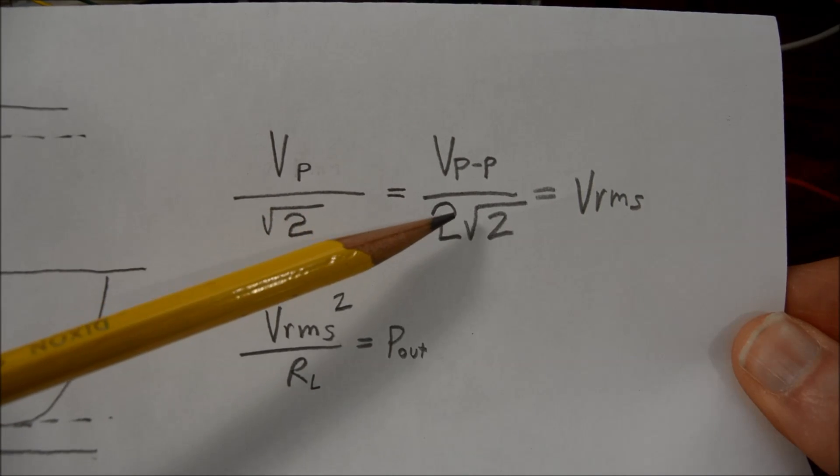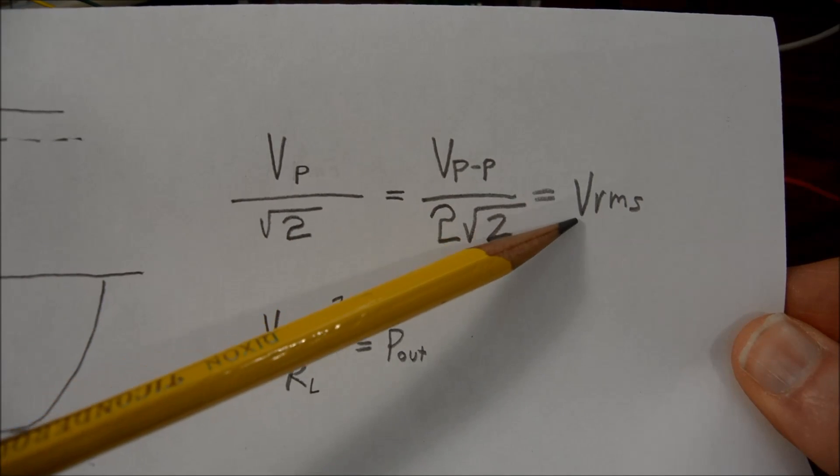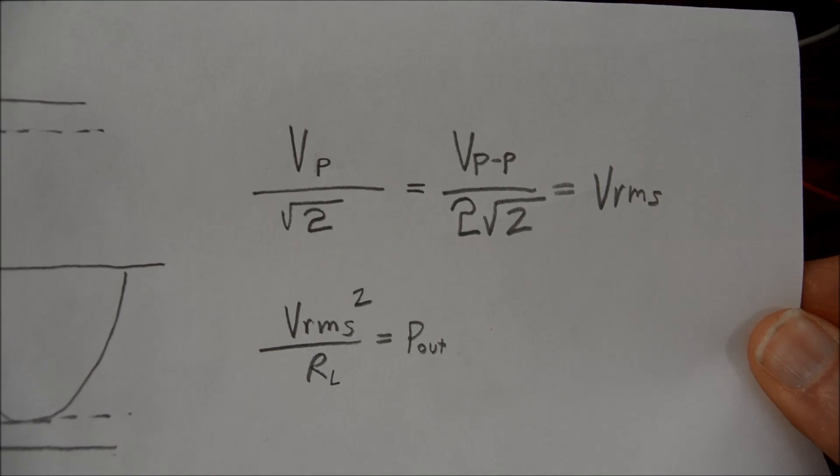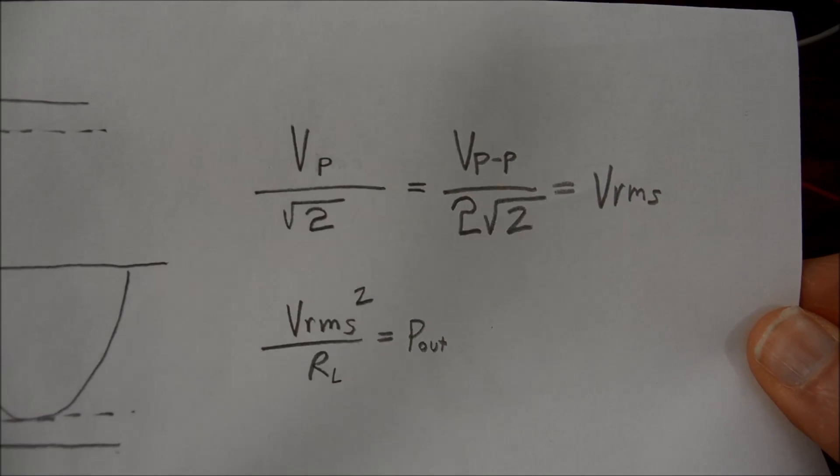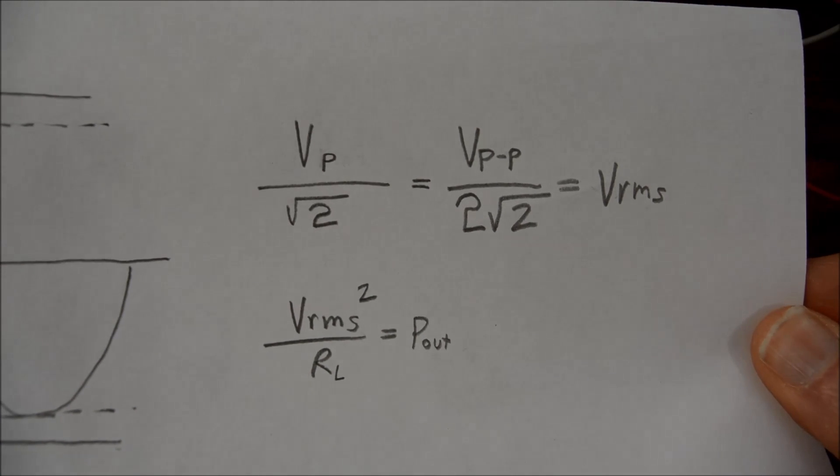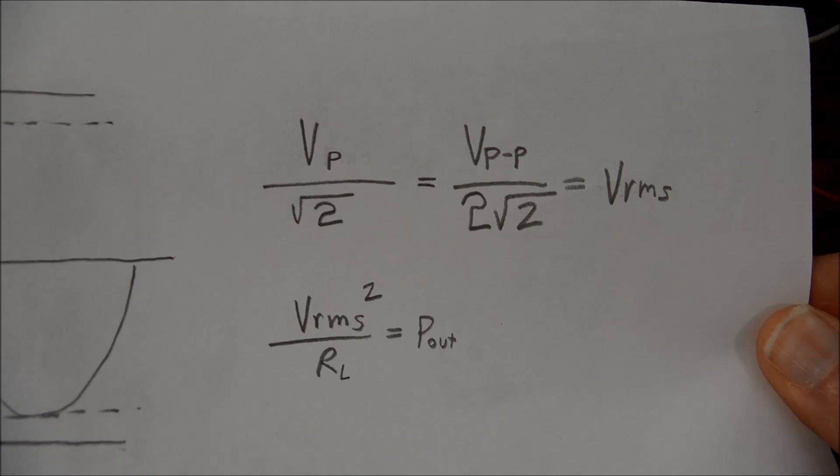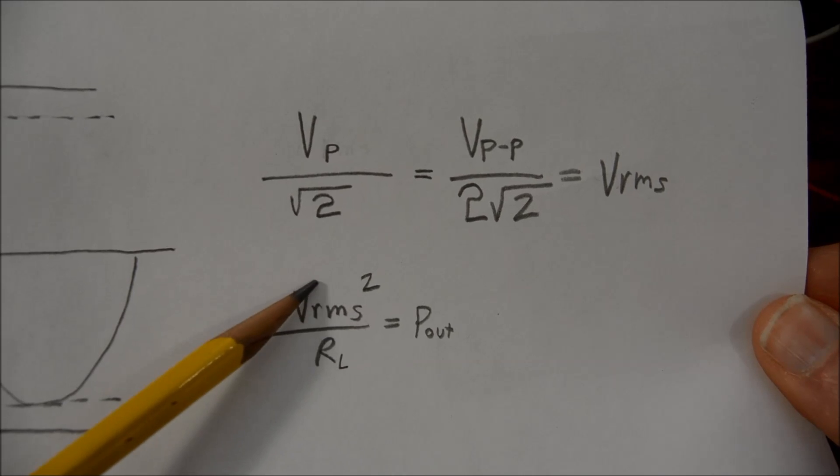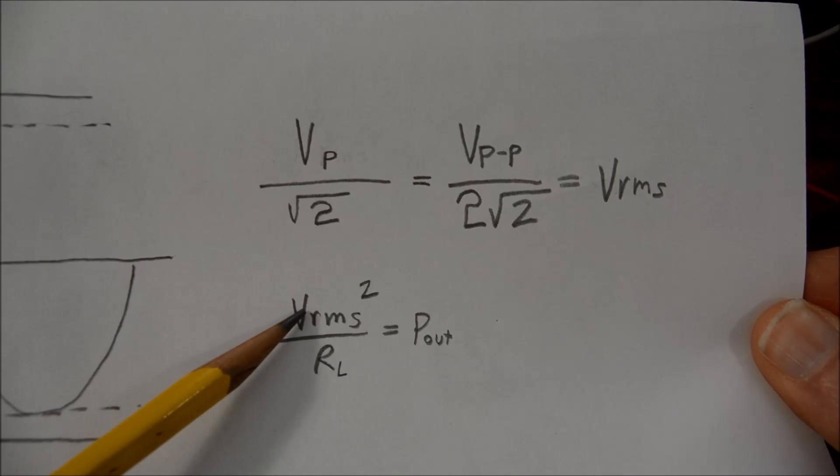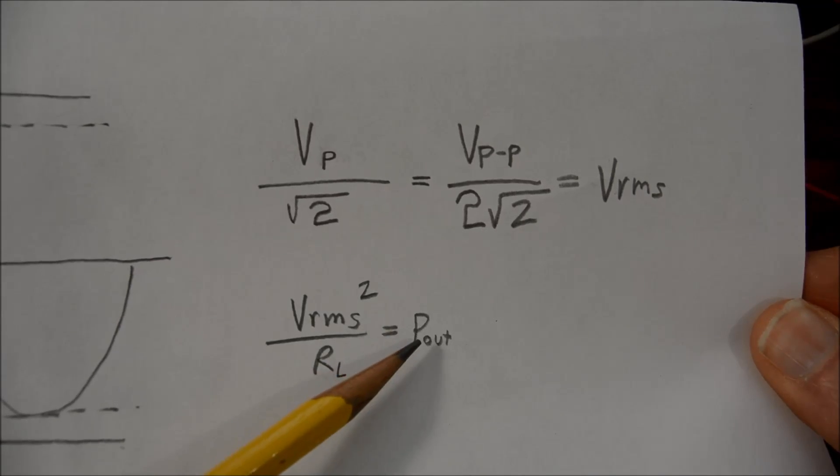The nice thing about oscilloscopes now is they will measure directly the RMS voltage, so we can just plug that into the calculator. You have to square the volts RMS divided by the load resistance, and that will give us our output power.